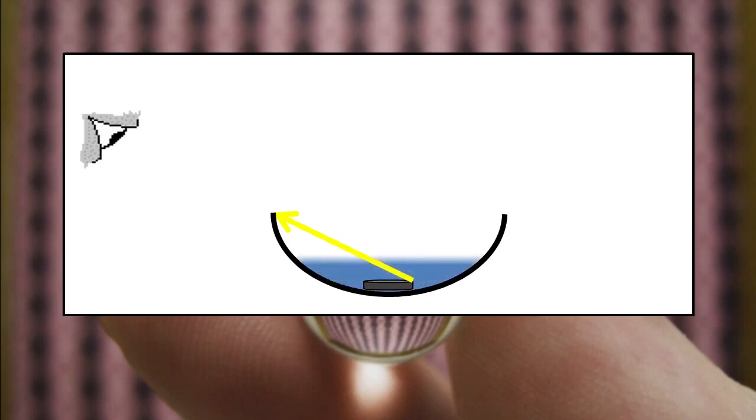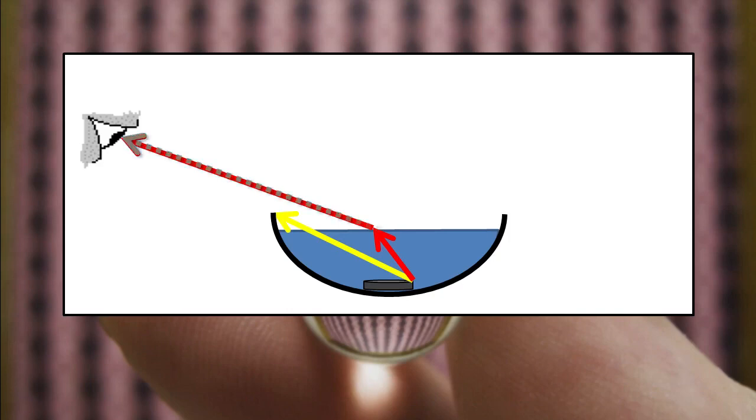However, when the bowl was filled with water, the path of least time now bends. And now the light from the coin is visible to our eye. It's able to reach our eye. Our brain simply traces this path back and forms an image at this location. This image is called a virtual image because it's not the actual location of the coin. The coin is actually at the bottom of the bowl. This is simply the place where our brain thinks the coin is.